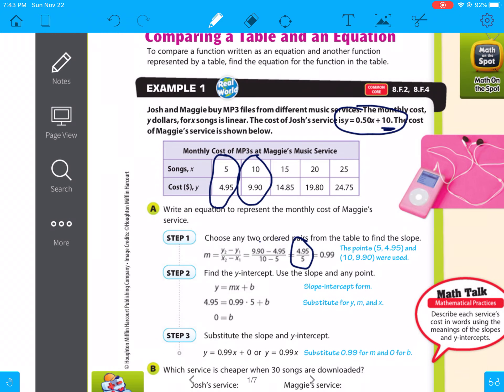Now they use the y-intercept, they put it in y equals mx plus b form, plugged in 4.95 for the y, and then the 5 for the x, which was right here, and they found out that the b was zero. So they would end up with y equals 0.99x. That means it's 99 cents per song.